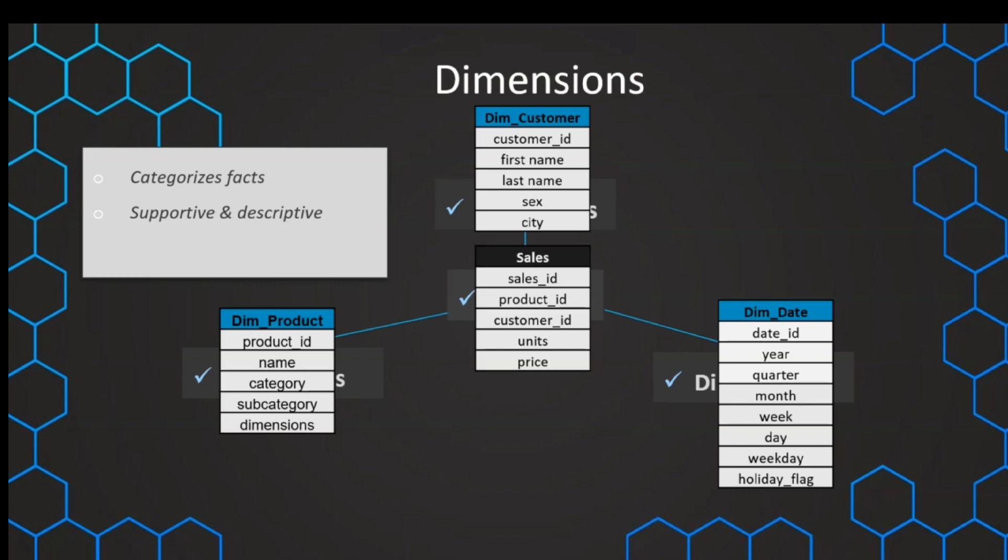Therefore, the character of dimensions is supportive and descriptive. We can't measure it, but we use it to describe, for example, the product name or product category.